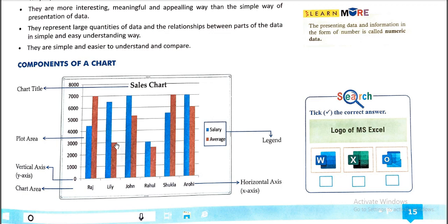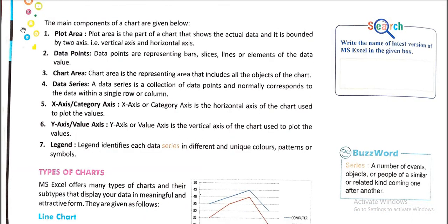Plot area. Here is salary, average and some person names. Just Raj, Lily, John, Rahul, Shukla, Aruni. So come on next. The main components of a chart are given below. First point is plot area. Plot area is the part of a chart that shows the actual data and it is bounded by two axes, that is vertical axis and horizontal axis.